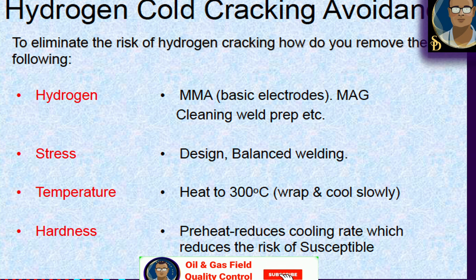Four factors are necessary to cause heat affected zone hydrogen cracking; if any one is absent, cracking may not occur: hydrogen level greater than 15 ml per 100g of weld metal deposited; stress greater than 0.5 of yield stress; temperature less than 300°C; and a susceptible microstructure with hardness greater than 400 HV. If any one of these factors is not satisfied, cracking is prevented.